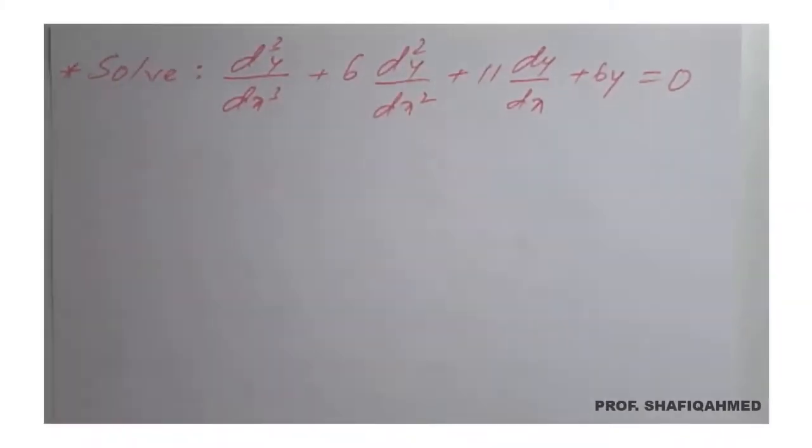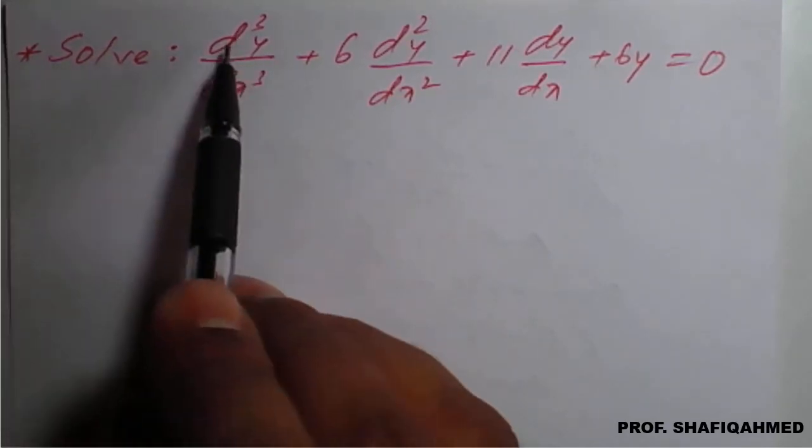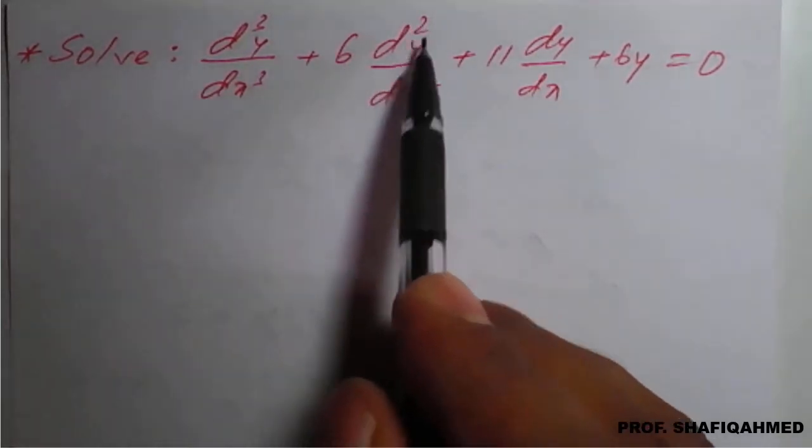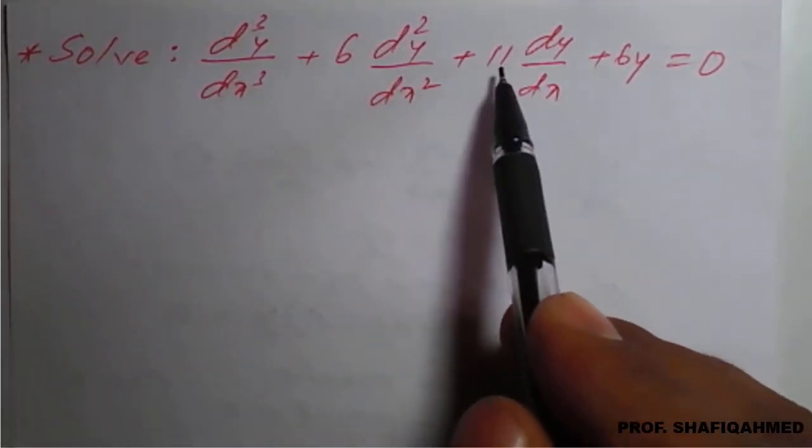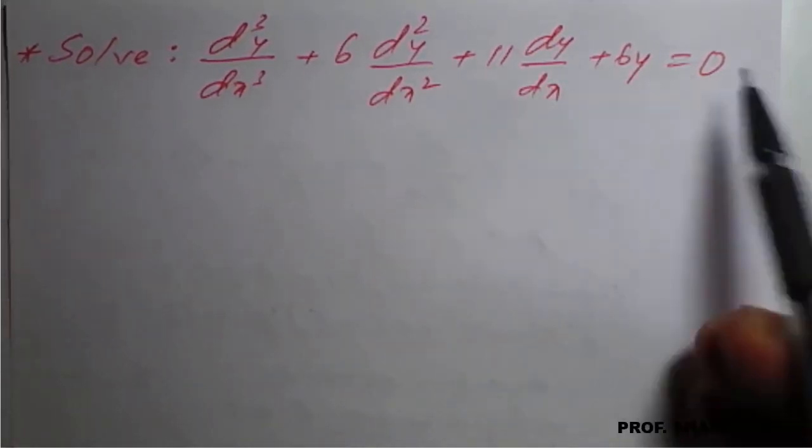Hello, everyone. In this lecture, we will see solutions of homogeneous differential equation. A problem is solve d³y/dx³ plus 6 times d²y/dx² plus 11 times dy/dx plus 6y equal to 0.